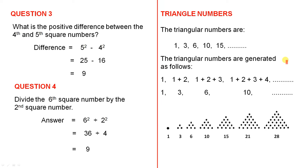The triangle numbers are generated as follows. The first one is 1. The second one is 1 plus 2, which is 3.